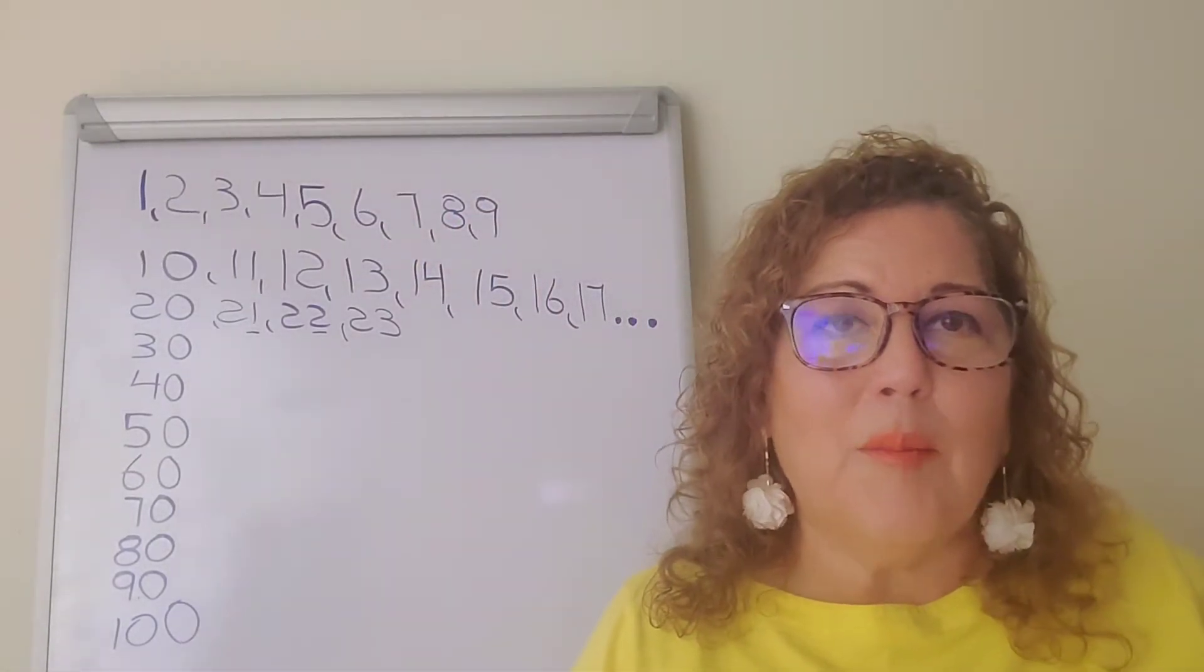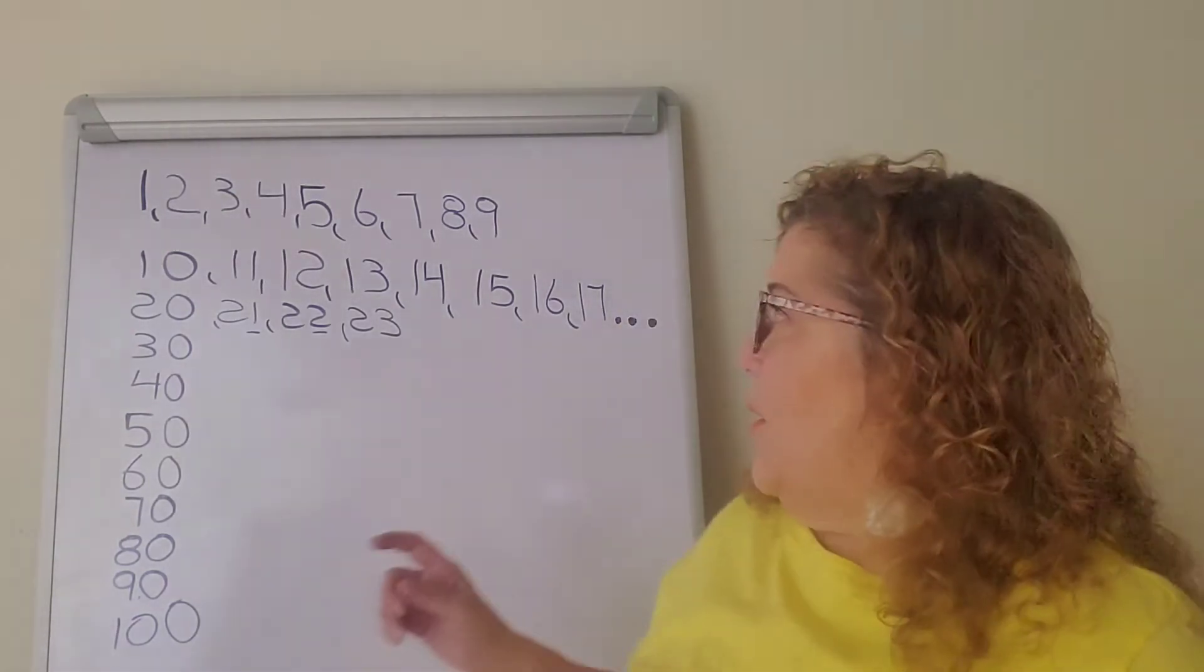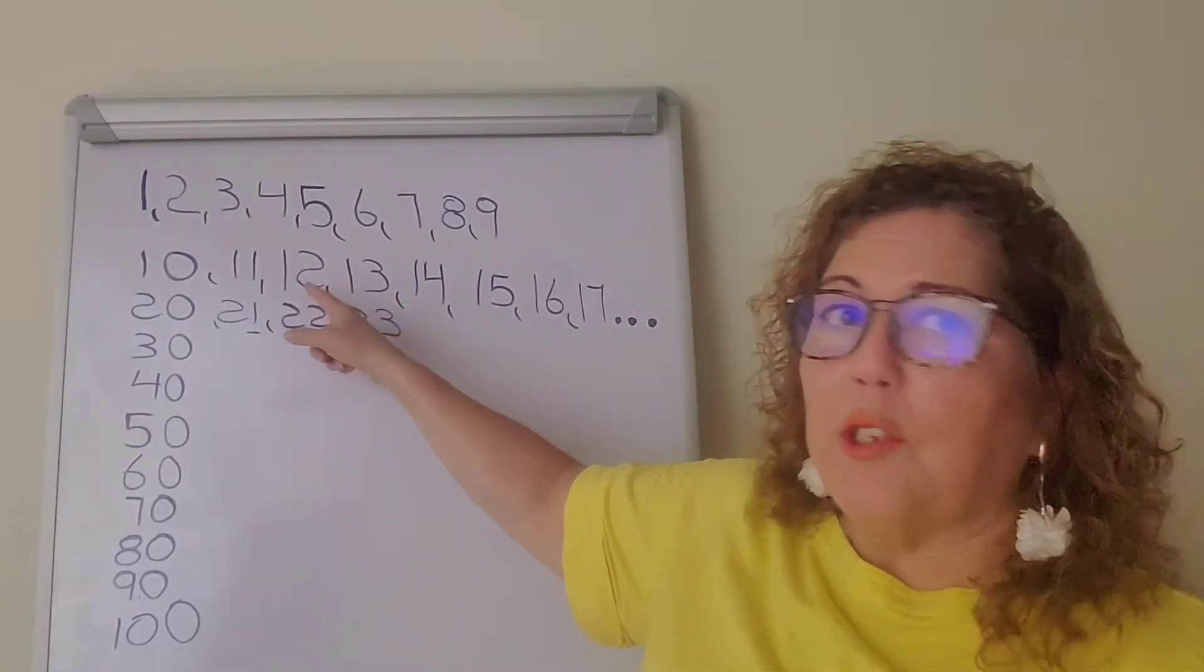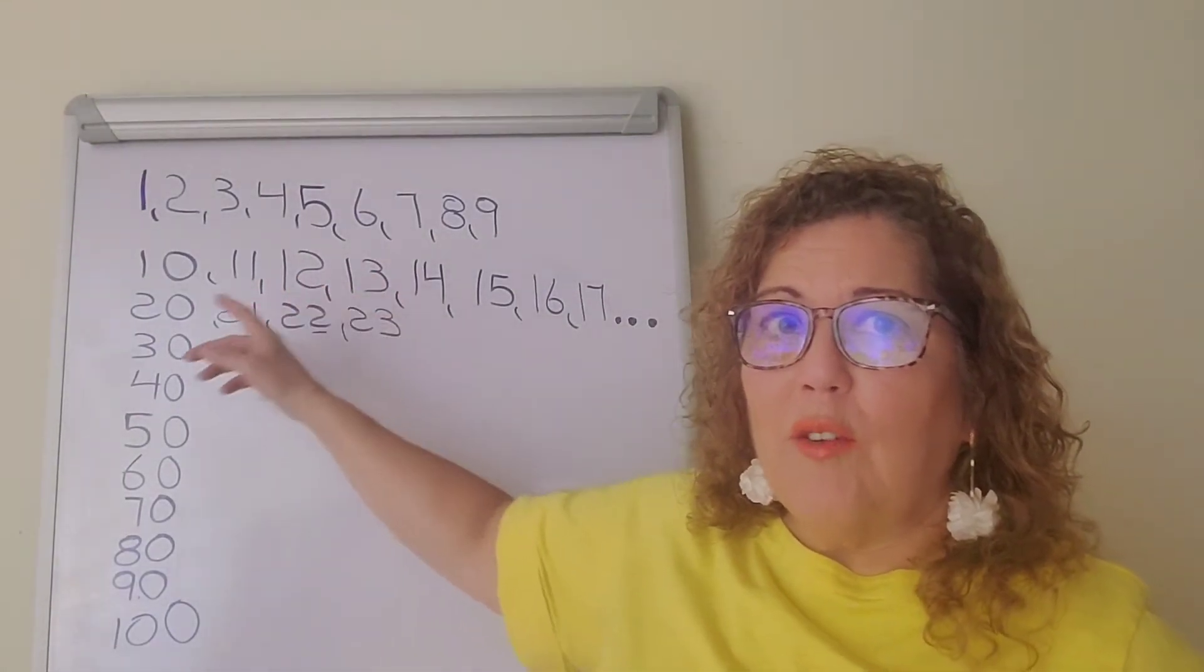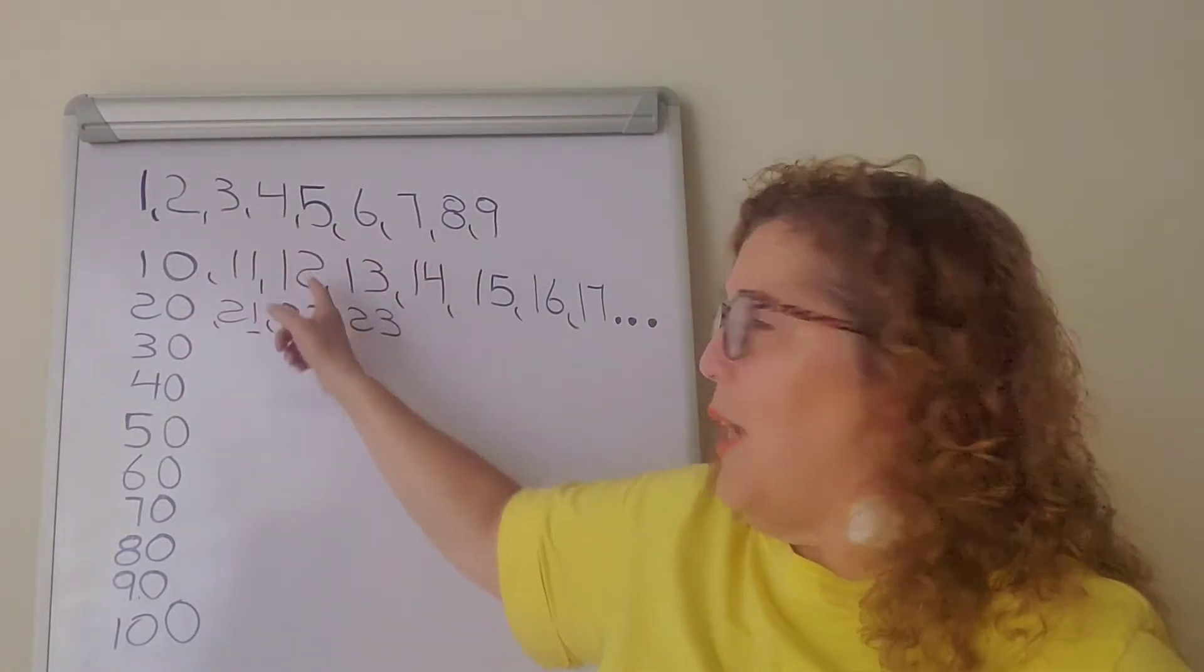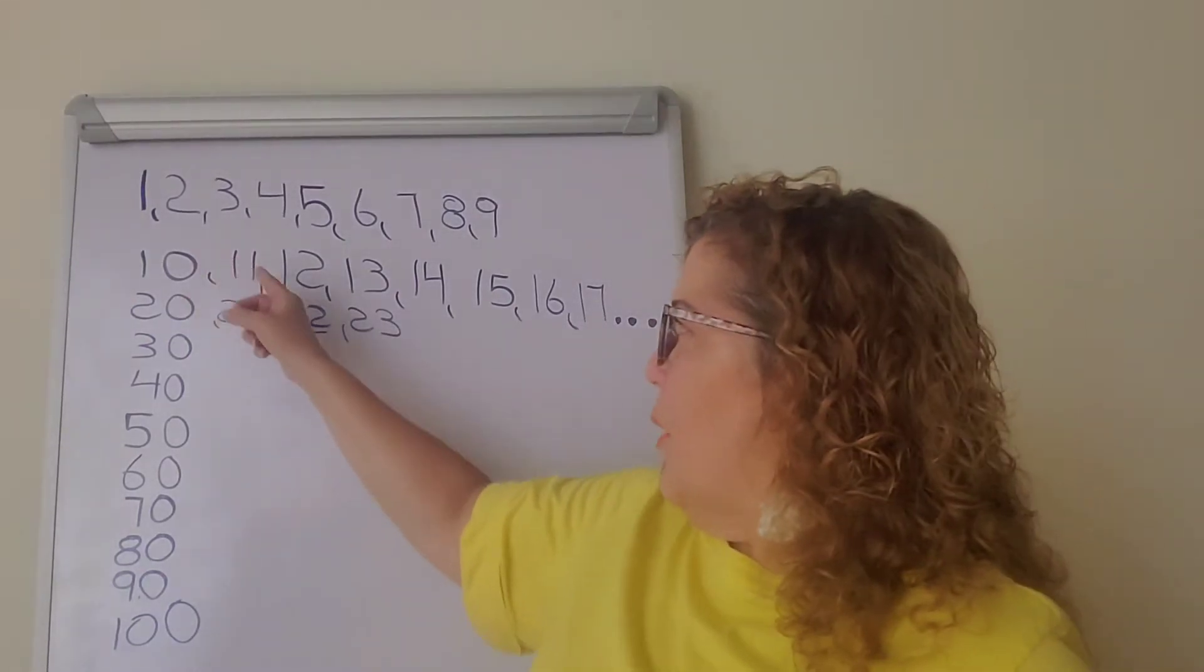The next number, the number that comes after 9, is 10, which is 1-0. The next number is 11, which is 1-1. The next number is 12, which is 1-2. If you see, there is a sequence here. We're using these same numbers to create the following numbers.